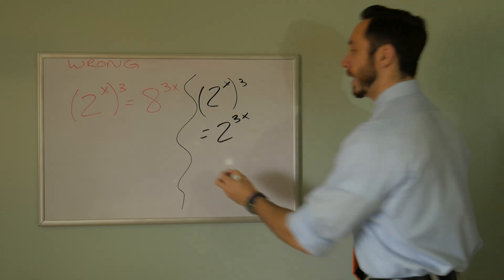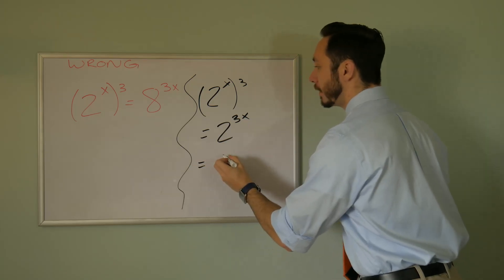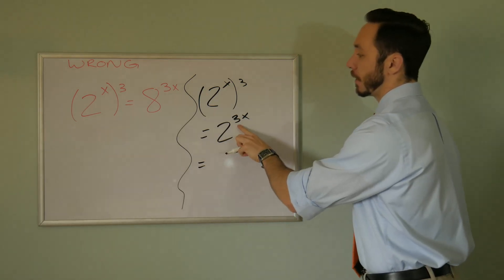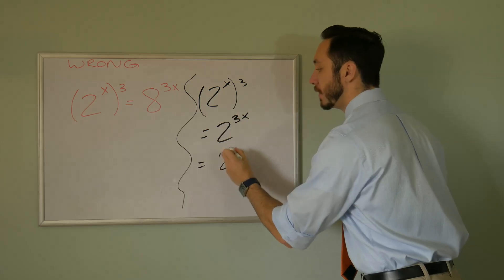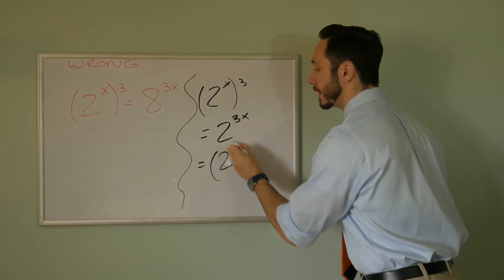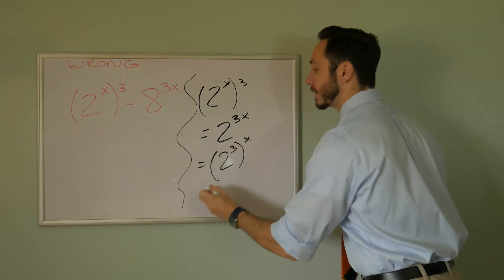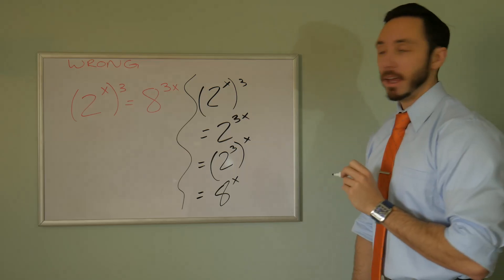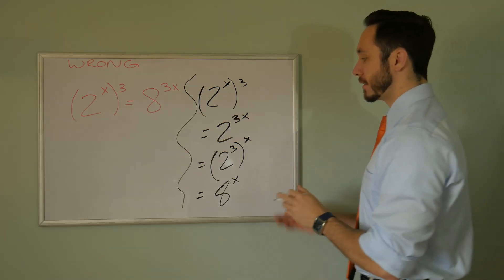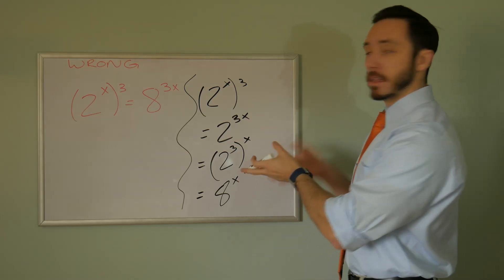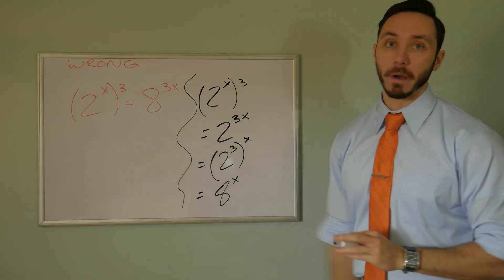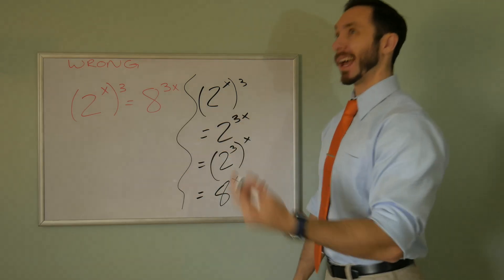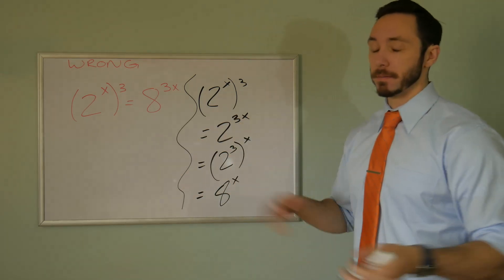If you wanted to go further, you can apply this power of three — so you can say two to the third, and then this is all to the x, to get eight to the power of x. That three is only being applied once, not twice, because otherwise you would then have eight to the third again, which is some huge number.